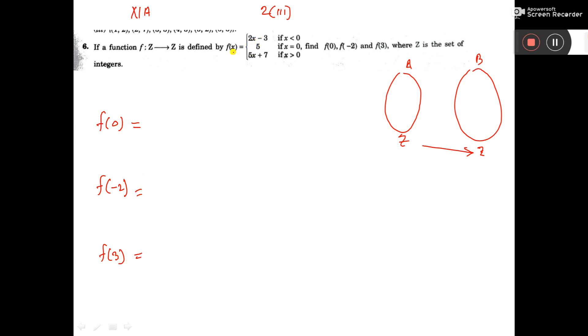Now see, f(x) equals 2x minus 3 if x less than 0. But here, f(0) we have to find. So here it is written, f(x) equals 5 if x equals 0.